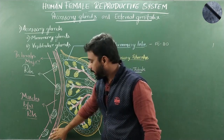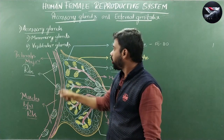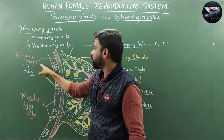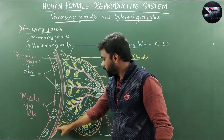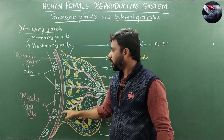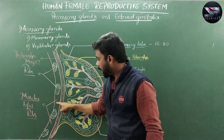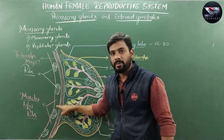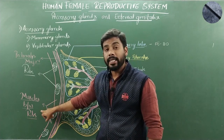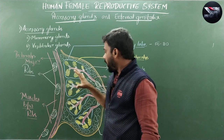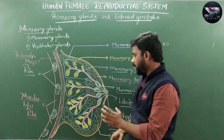If we take the sectional view of mammary glands, they are generally situated in the thoracic region just before a muscle of our chest called pectoralis major. The sectional view also shows the ribs and the muscles present between the ribs, which we call intercostal muscles. The mammary gland is generally semi-circular in shape.